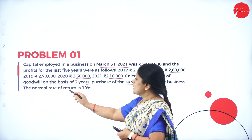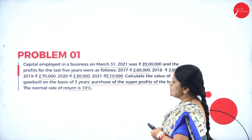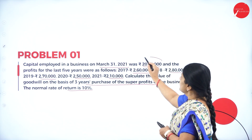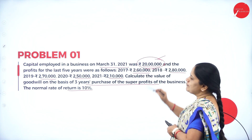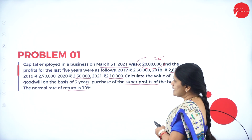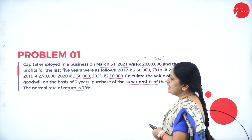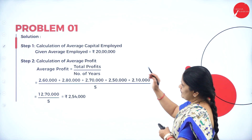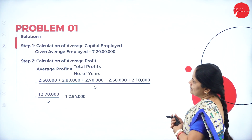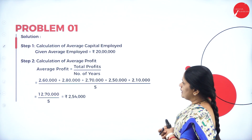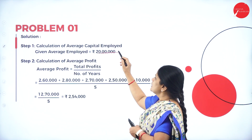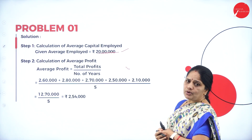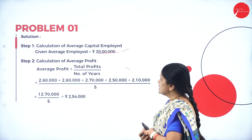The normal rate of return is 10 percent. They have given the profits for the last five years and also the capital employed, which is 20 lakhs. We have to calculate goodwill based on super profits. First, we find the average capital employed — we assume the capital employed and the average capital employed are the same, so that is 20 lakhs.